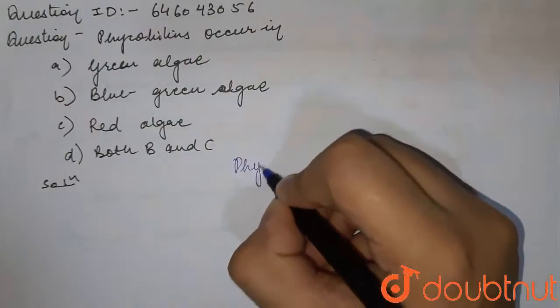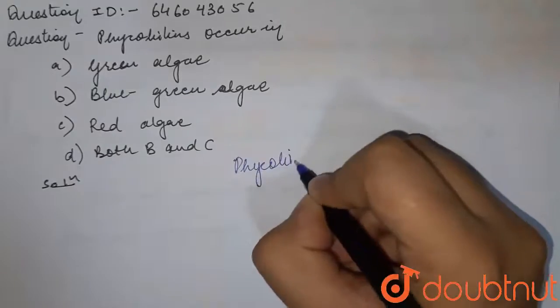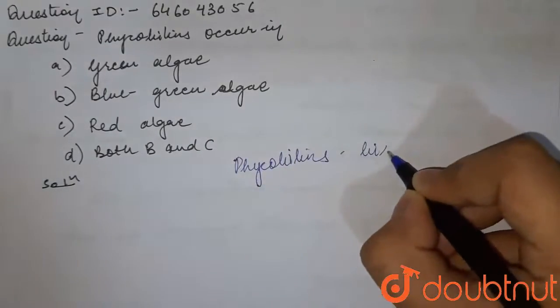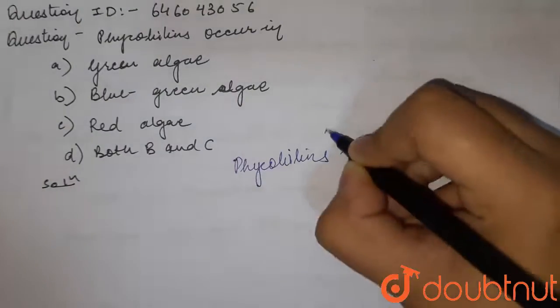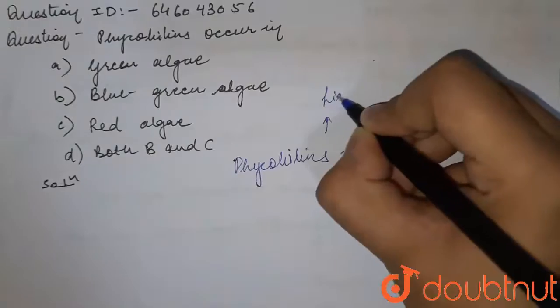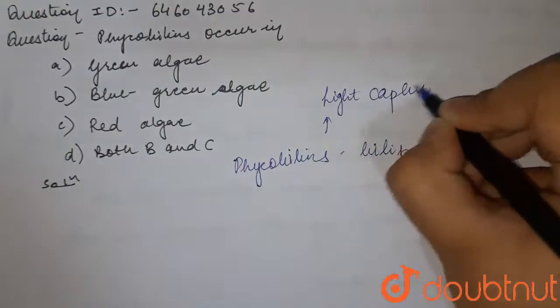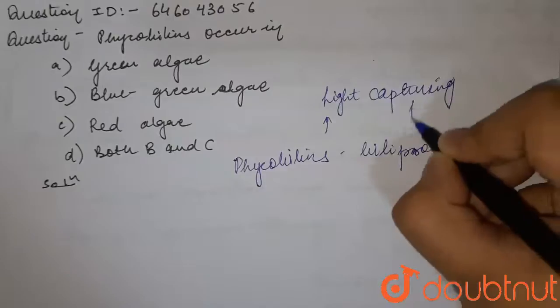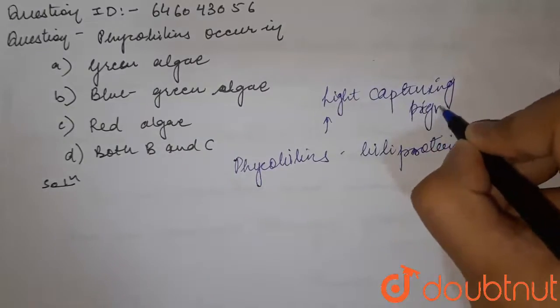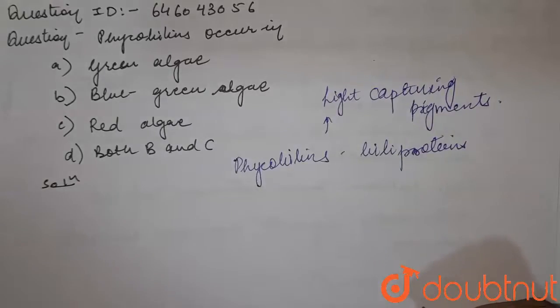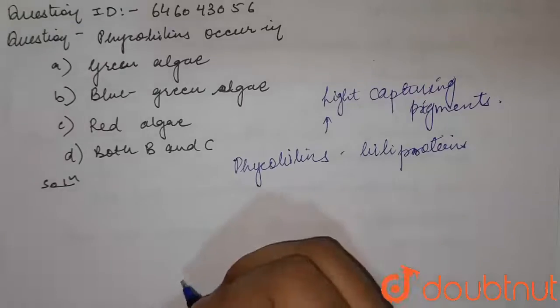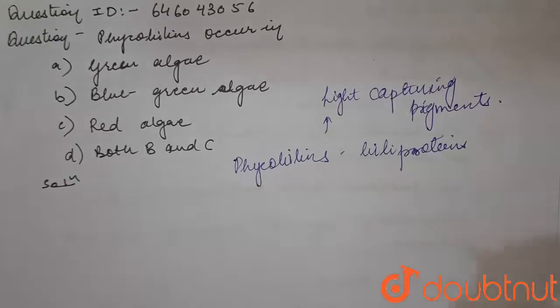These phycobalins, first of all, are the wild proteins, you can say billy proteins, which are light capturing pigments present in some algae. They act as the accessory photosynthetic pigment and hence help in photosynthesis. There are three classes of pigments in cells in the algae, which is chlorophyll a, b, c, d, e.